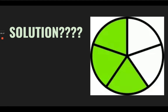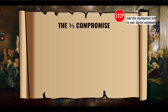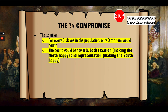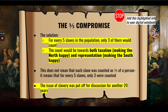The Three-Fifths Compromise: for every five slaves in the population, only three of them would count. That count would apply to both taxation — making the North happy — and representation — making the South happy. This does not mean each slave was counted as three-fifths of a person; it means that for every five slaves, only three were counted. Additionally, the issue of slavery was put off for discussion for another 20 years. Why would the framers not want to discuss the topic of slavery for another 20 years?